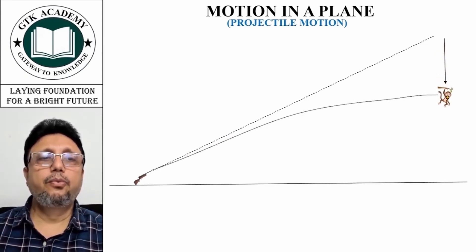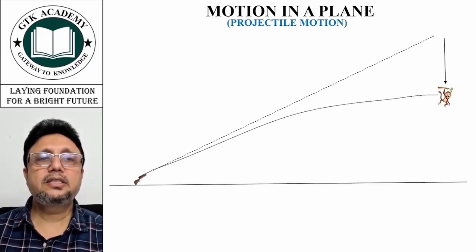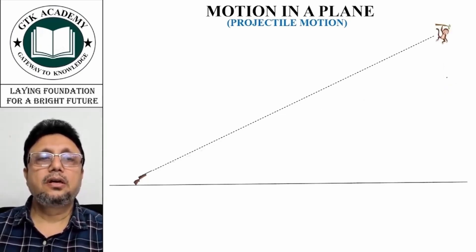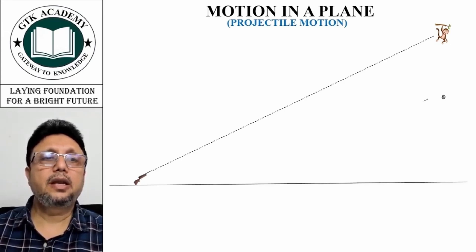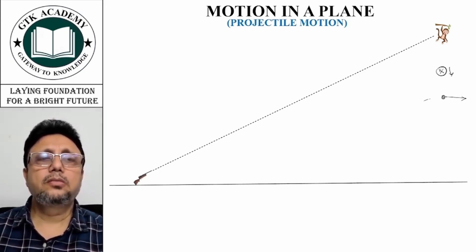If both reach the same place, then only the monkey is going to be hit. Suppose your shot reaches this place, and since it is going in projectile motion it is going like this, and the monkey is still at this place. So the shot is not going to hit the monkey.